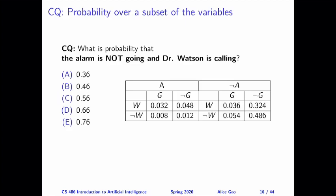For the next three slides, I have three practice questions to help you practice the sum rule. In this video, I'm only going to show you the solutions, and in a separate video I will show you the process. The first question is: what is the probability that the alarm is not going and Dr. Watson is calling? We want to calculate P(¬A, W), and the correct answer is 0.36.